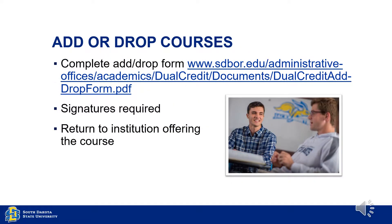Dual credit students who wish to modify their original course selection must complete the add/drop form, which needs to be signed by the student, parent, and high school. We require this so we know everyone is aware the student is changing their original schedule. We don't want students dropping courses that may affect their high school requirements. The form should be returned to the teaching institution. Visit this link for a copy of the form or contact your counselor or myself.